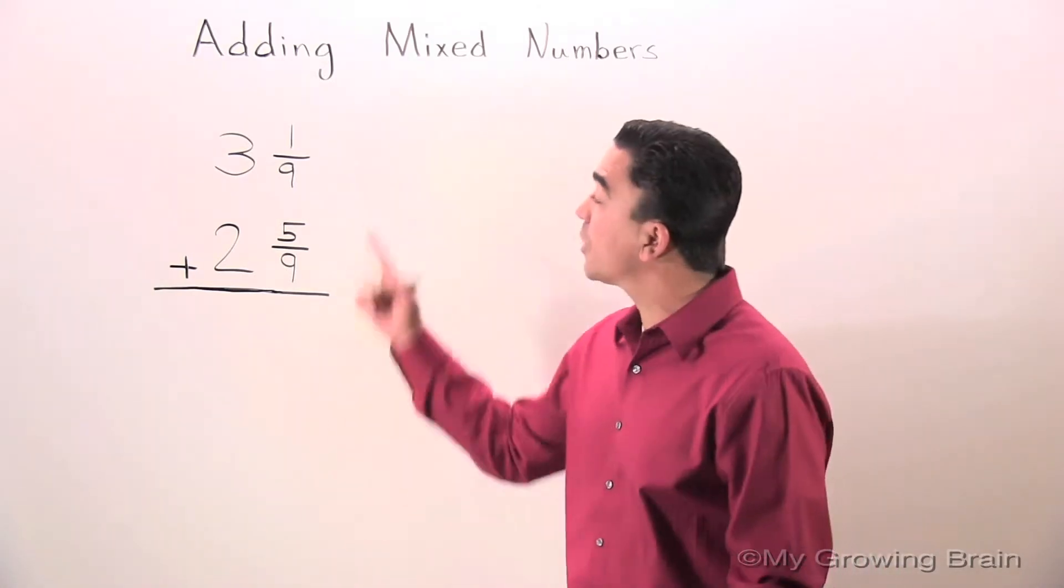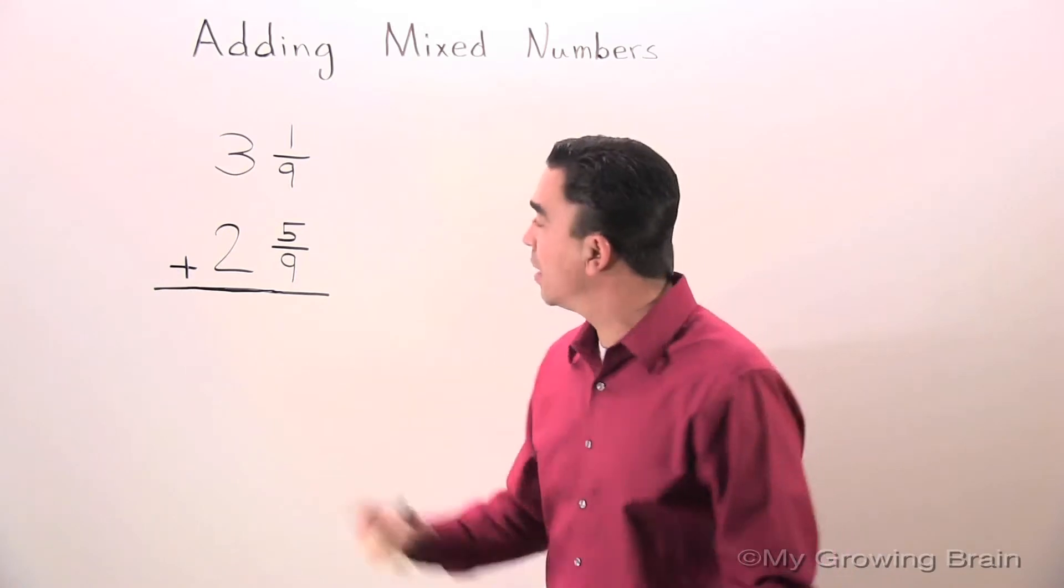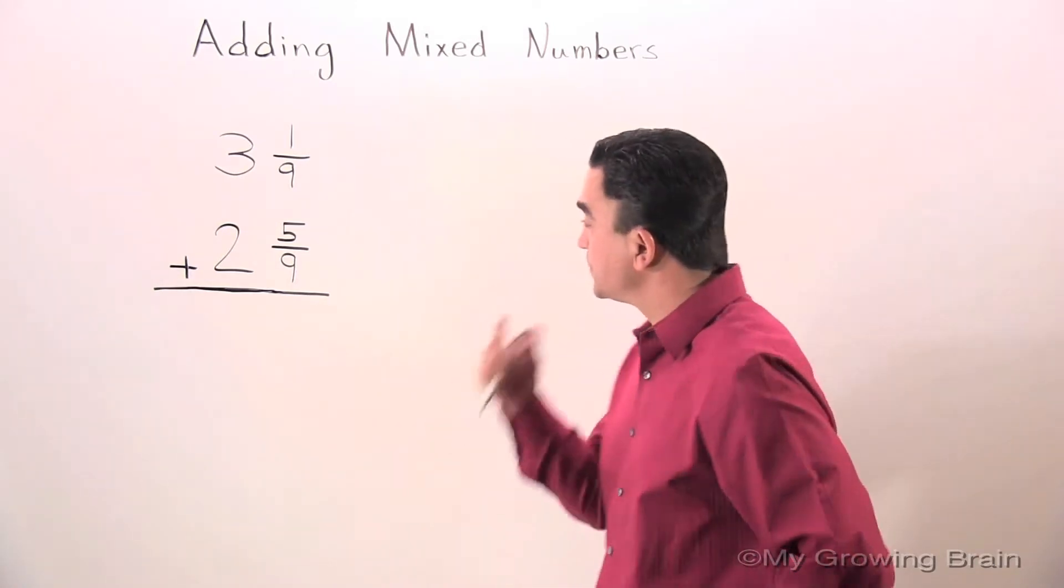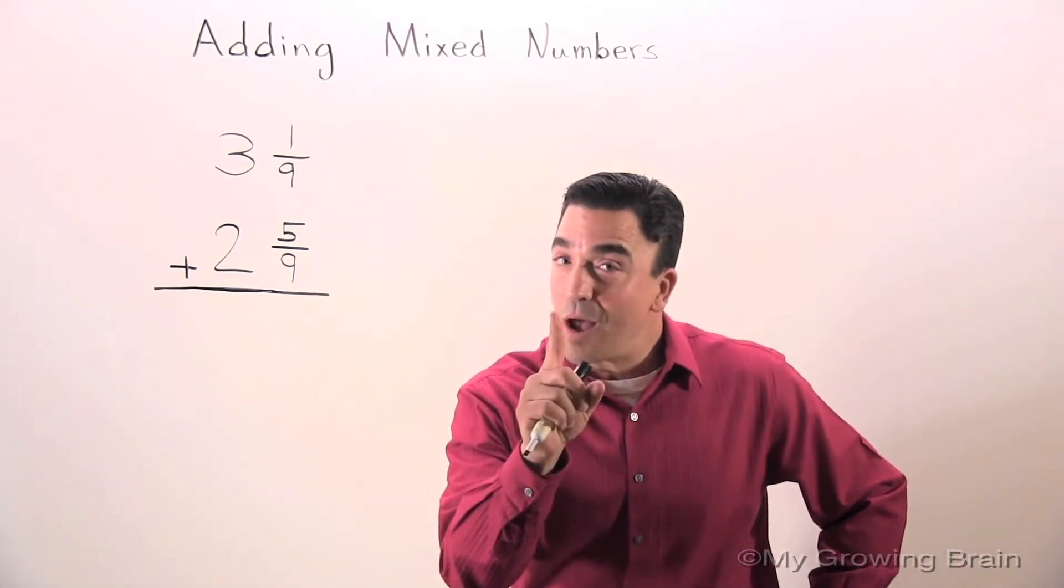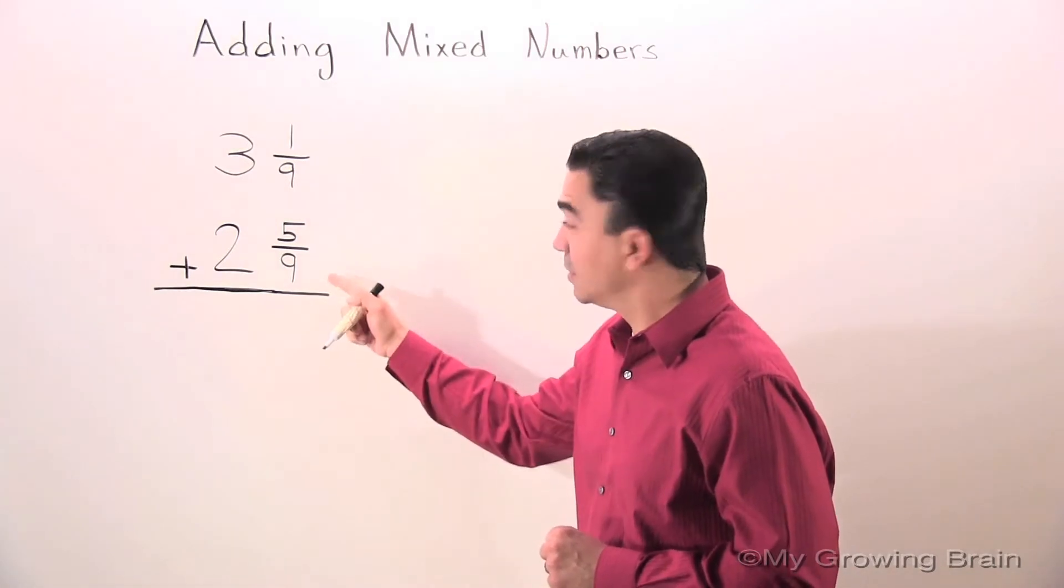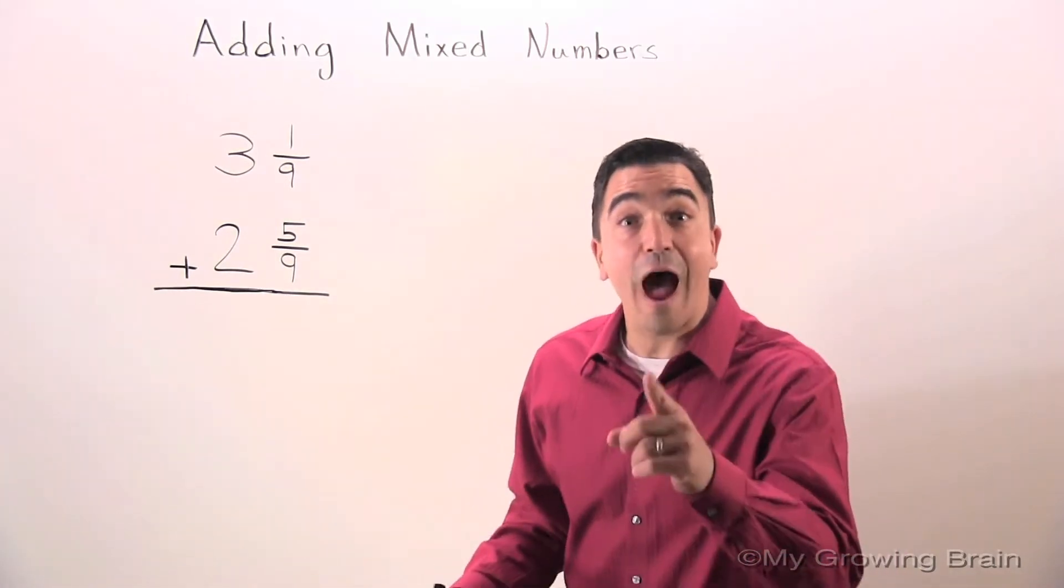Here's our problem. 3 and 1/9 plus 2 and 5/9. Step 1, we need to look for a common denominator. We got it! 9!